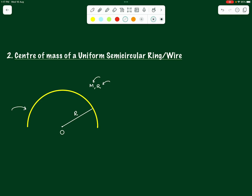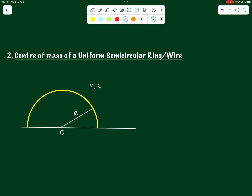To do the mathematics of this question, we take the x-axis along the horizontal — the one that passes through the two ends of the half ring as well as through the center of the half ring. And the axis perpendicular to that, passing through the center, will be the y-axis. With respect to these x and y coordinates, we will find the center of mass.